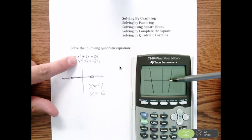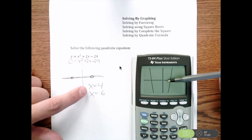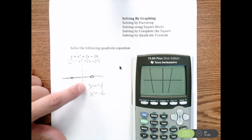Again, we're graphing it and you're looking for the x intercepts and you just write them as is. So x equals 4, x equals negative 6.